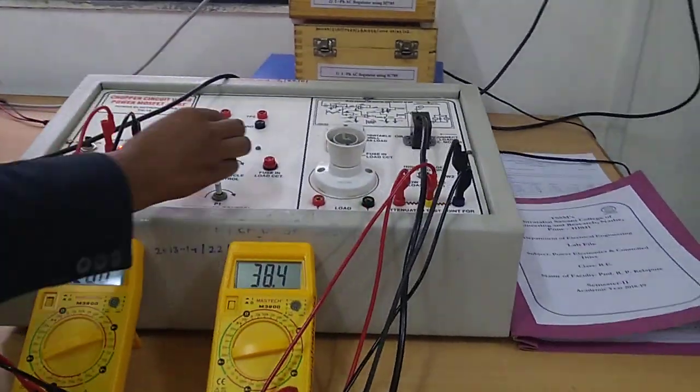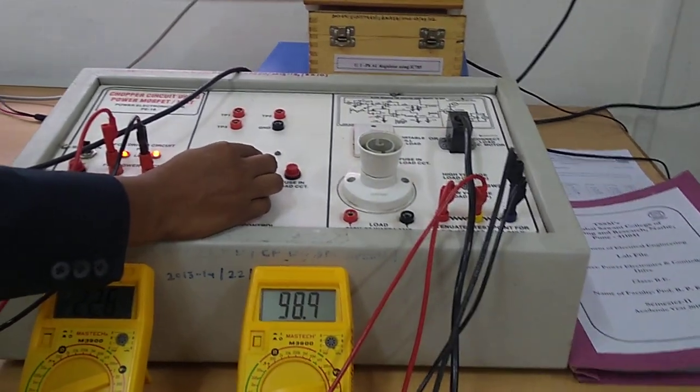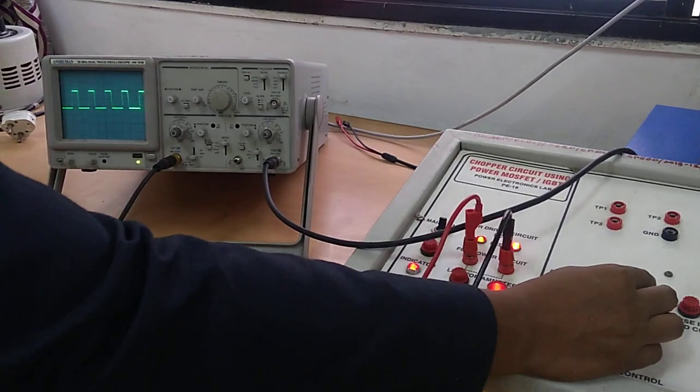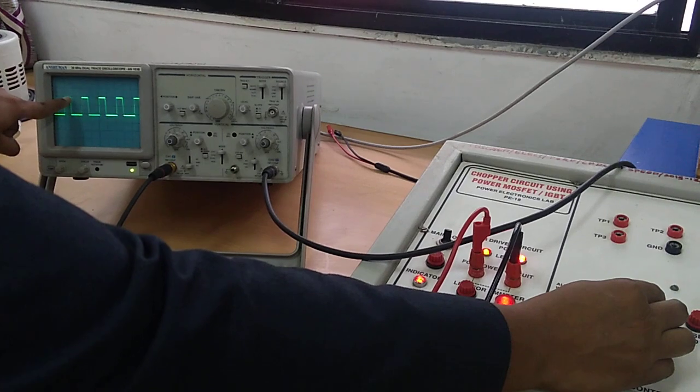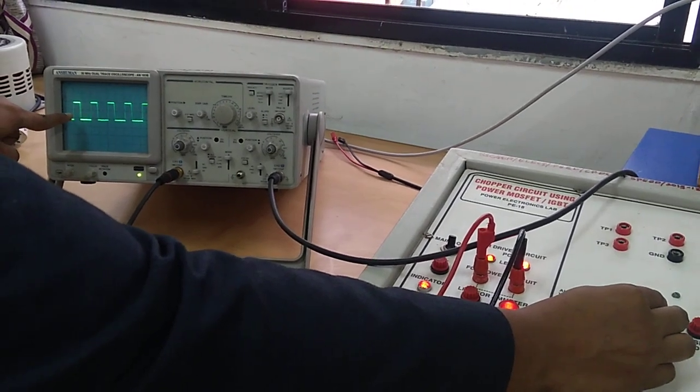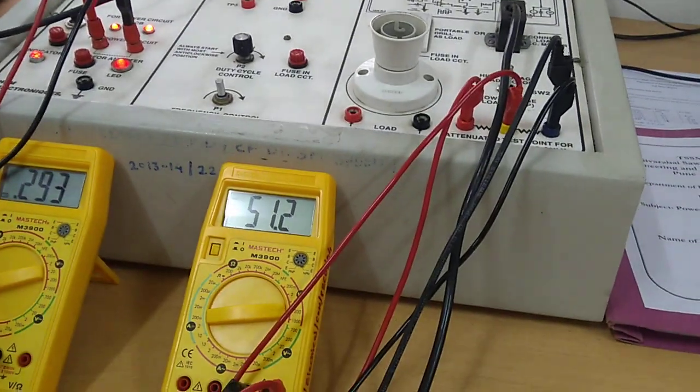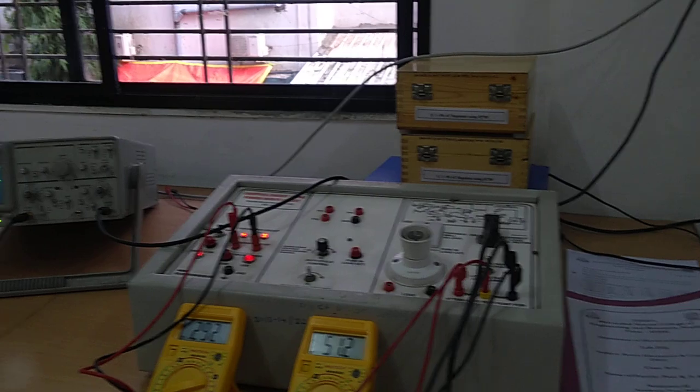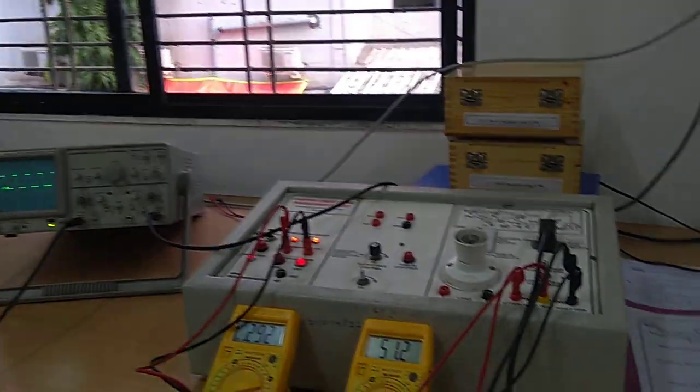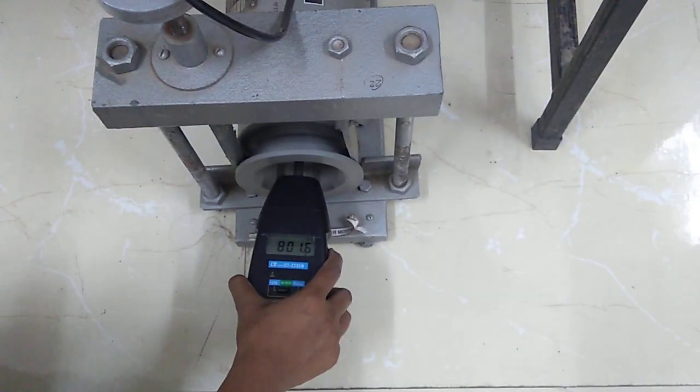Now we will vary the duty cycle by using this pot. You can observe the CRO. See, we are increasing the on time of the MOSFET. So Ton we are increasing. You can see that the voltage is also rising. Right now it is 51.2 volts. And if we now measure the speed, it is around 790, near about 800 RPM.